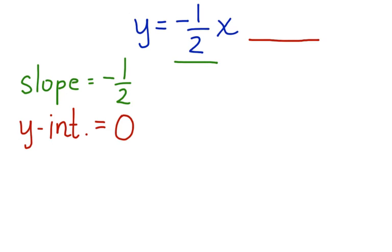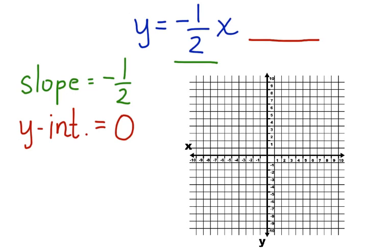Now, let's graph the line. We start by graphing the y-intercept at 0. Now the slope is negative 1 over 2, so we go down 1 and over 2.